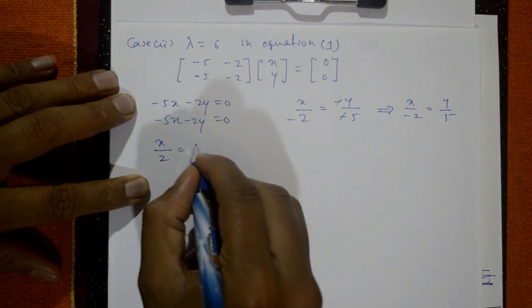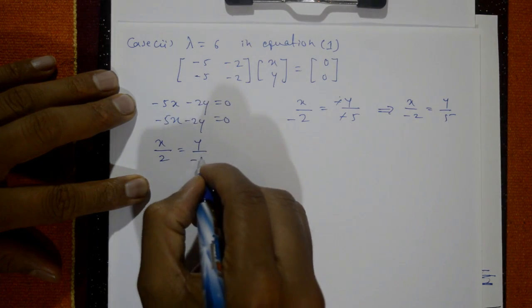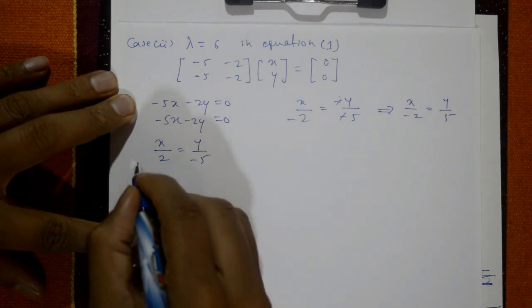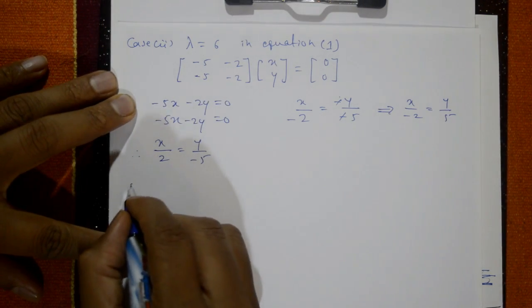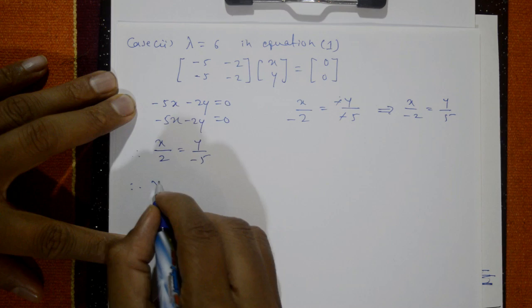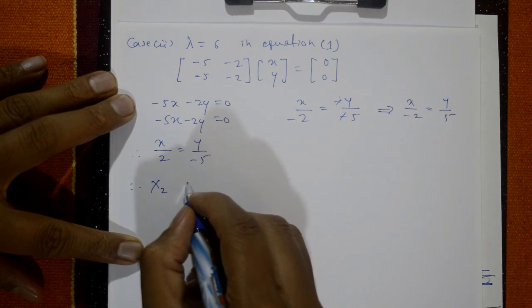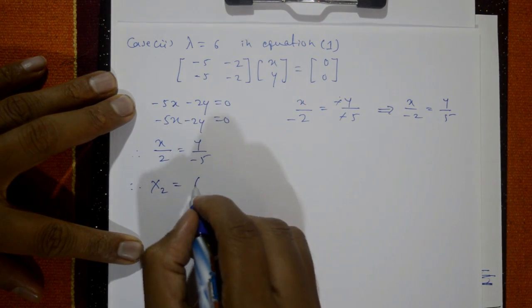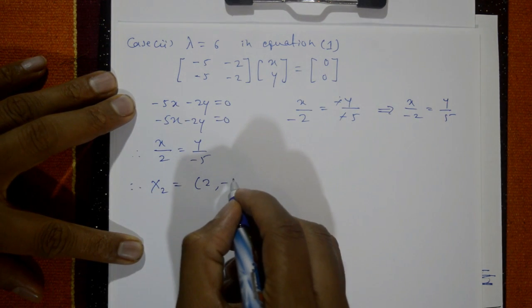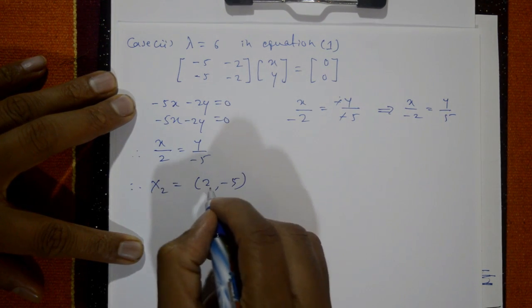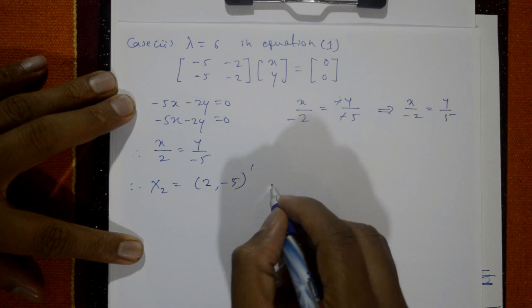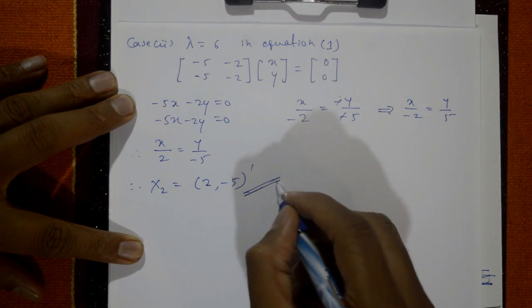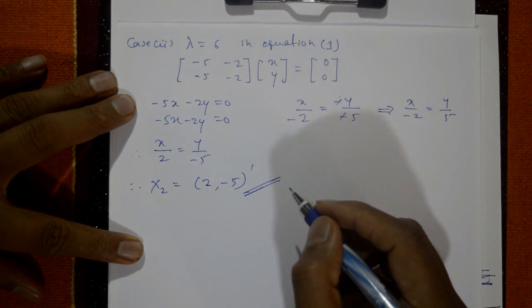Taking x as positive: x by 2, y by −5. Therefore the second eigenvector is the column matrix [2, −5]. This is the required solution.